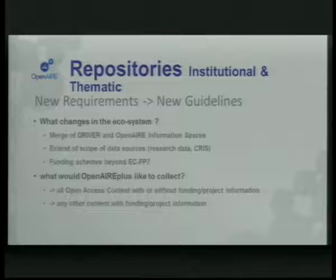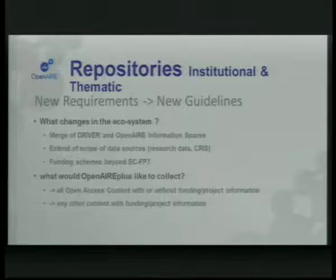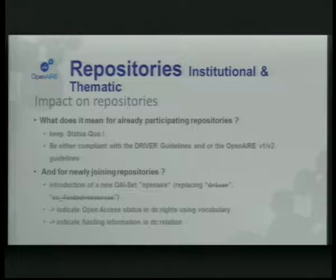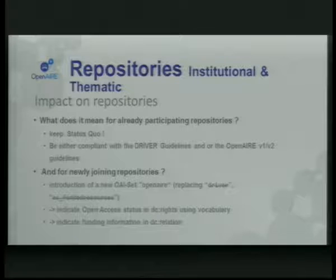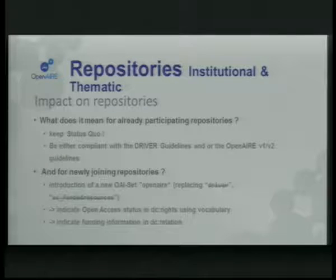As already mentioned, we are going beyond EC FP7. In OpenAIRE Plus, we want to collect metadata about open access publications — which don't necessarily have funding information — and also bibliographic metadata about research outcomes from funding information, which can be open access, embargoed, or closed access. For repositories already participating in DRIVER or OpenAIRE, we keep things as they are — status quo. Repositories compliant with DRIVER guidelines or OpenAIRE guidelines version one or two will continue to be harvested. They don't need to change anything at the moment.